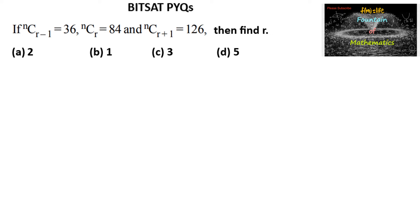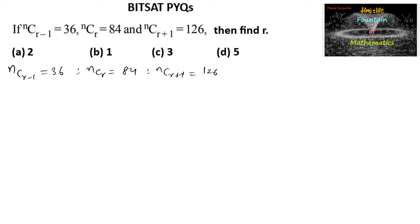Given N_C_(R-1) is equal to 36, N_C_R is equal to 84, and N_C_(R+1) is equal to 126.